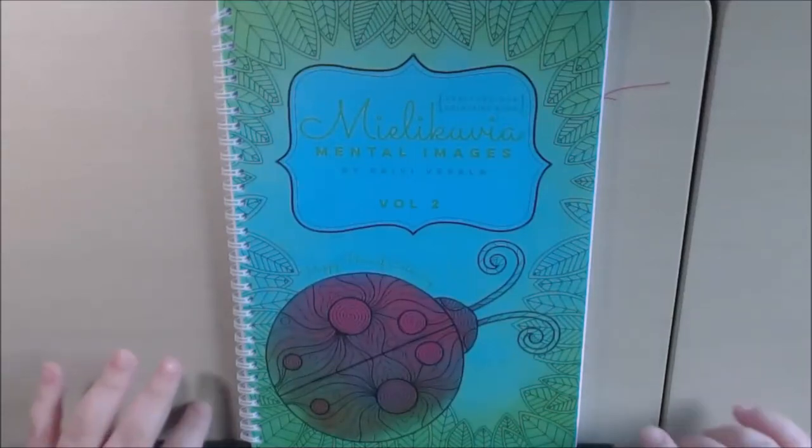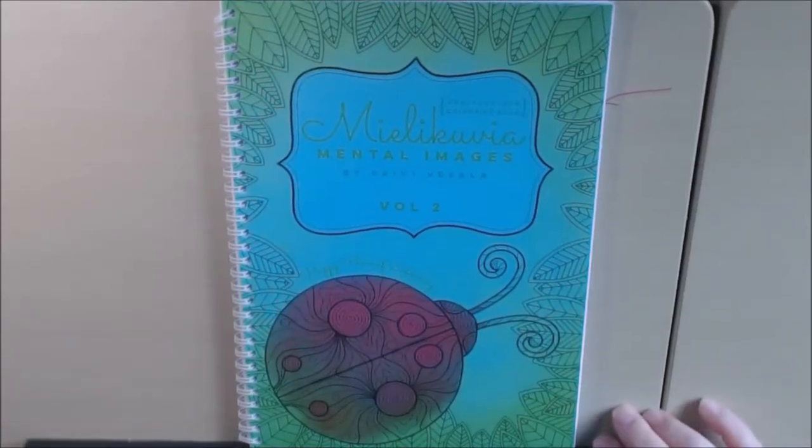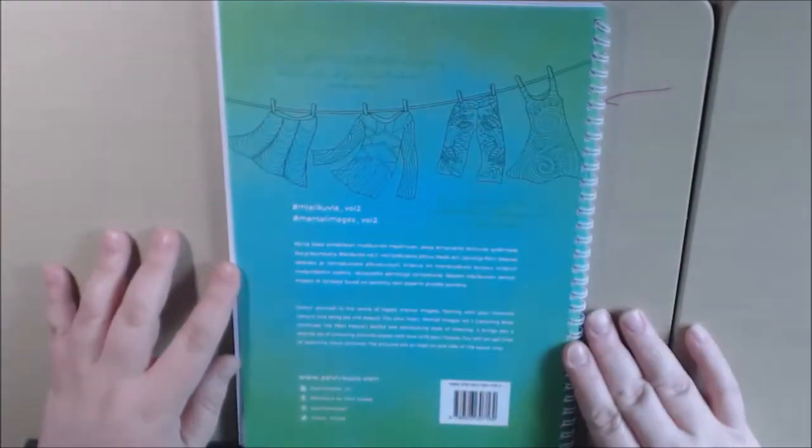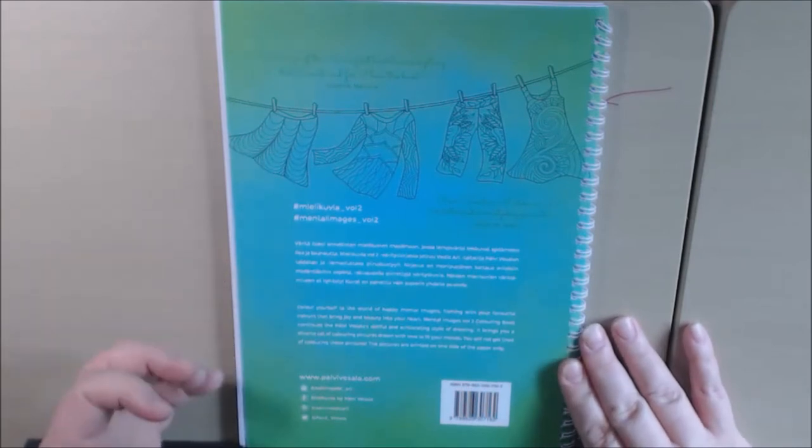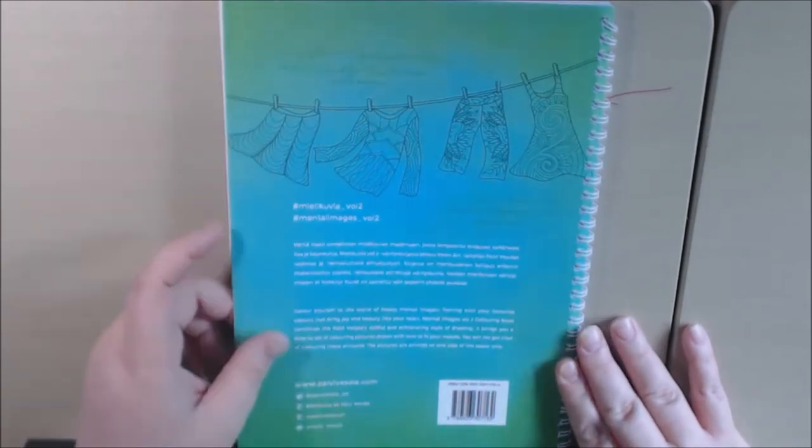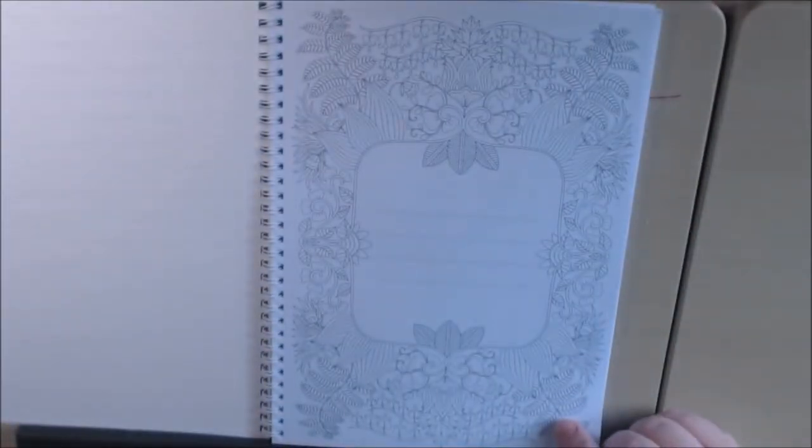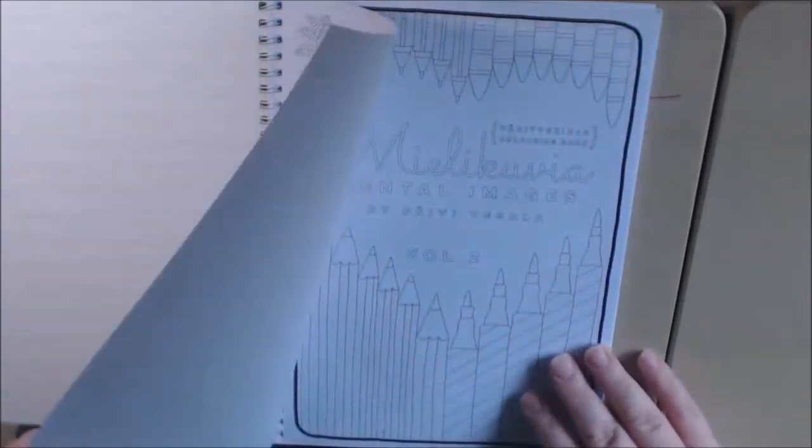Hey, I'm back with Mental Images Volume 2 by Pavi Vasala. It's spiral bound, non-perforated, single-sided. Some are advanced and some I would say are for beginners. She does a lot of detailed zen doodle type pictures.